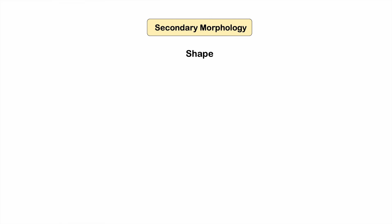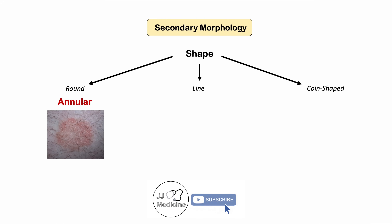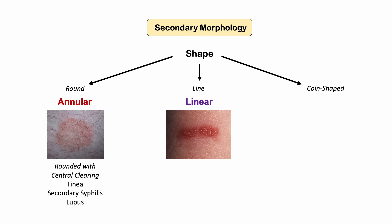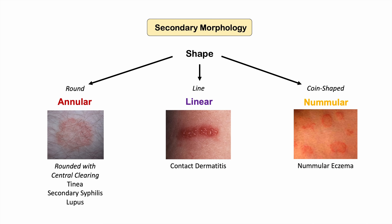Secondary morphology involves more specific details about the lesion, starting with shape. A round lesion with central clearing is annular — seen in tinea infections like ringworm, secondary syphilis, and lupus. A line-shaped lesion is linear, seen in contact dermatitis. A coin-shaped lesion is nummular, seen in conditions like nummular eczema.